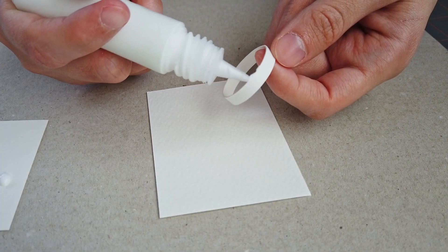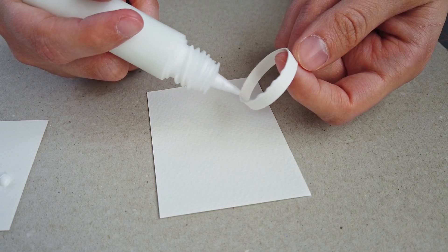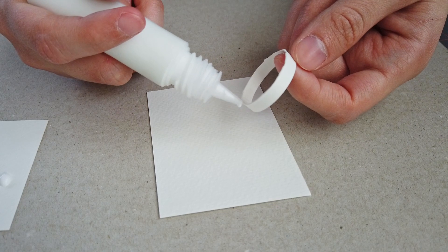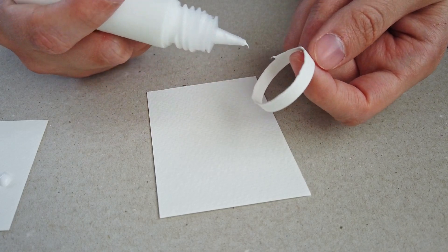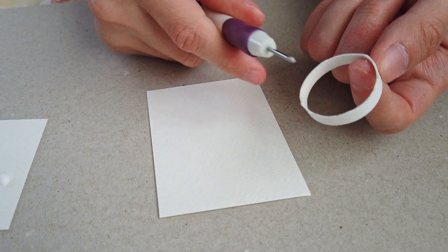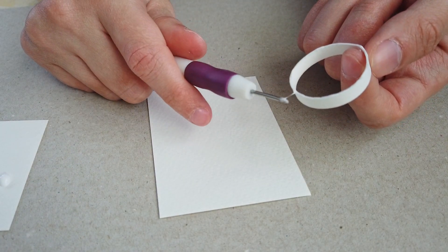Another method that I use is to apply glue directly to my quilling piece with my glue container, like you see me doing here. If you find that too much glue came out of your applicator, just use your quilling needle to remove some of it.